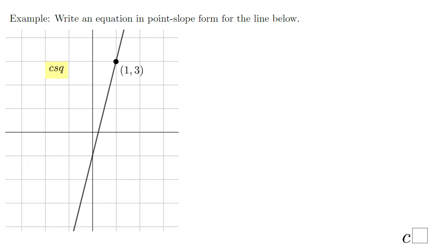A very similar example — the only difference is that the point is given on the graph. The point is (1, 3). We need to find the slope using the graph and then write the equation in point-slope form. Let me write the point-slope form one more time: y minus y1 equals m times x minus x1. The x1 and y1 represent the coordinates of the given point. We just need to find the slope.